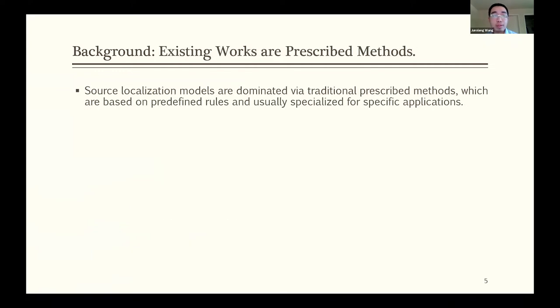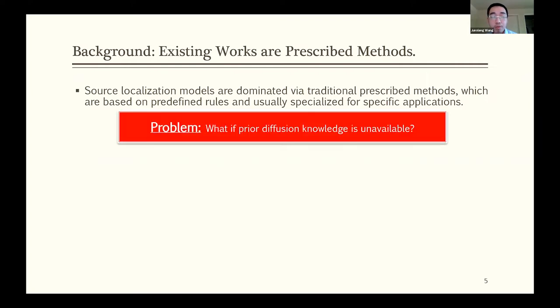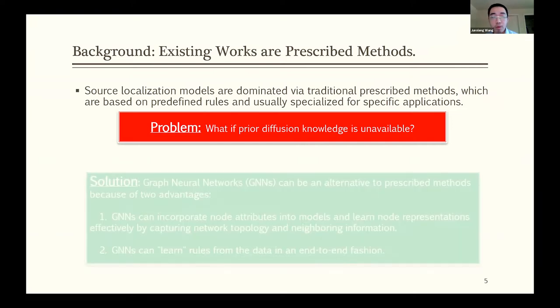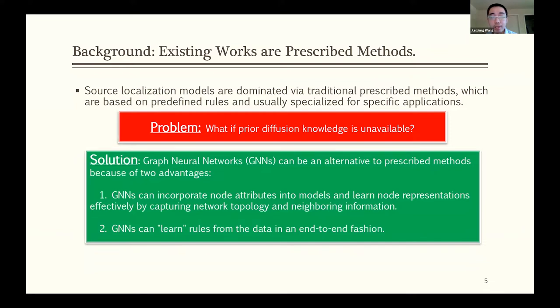Existing source localization models are traditional prescribed methods which are based on predefined rules, such as distance measures and heuristics. These rules are usually tailored or specialized for specific applications. Here is the problem: if we do not know any prior knowledge on graph diffusion, these rules may not work in this case. So as an alternative, we consider graph neural networks, or GNNs, as an alternative to the traditional prescribed methods. Because GNN has two advantages. First, GNN can effectively learn node representation by considering their network information and neighboring information. Second, GNN can learn the rules from the data directly instead of prescribed rules, and it can be trained in an end-to-end fashion.